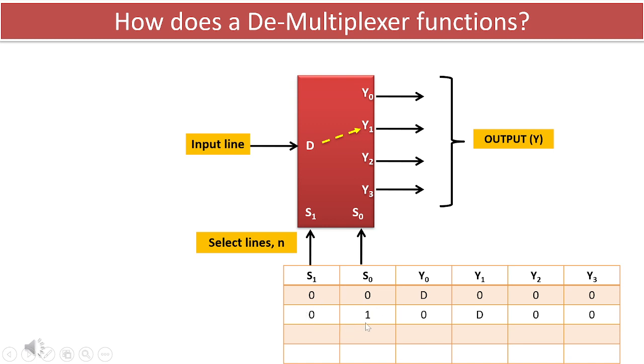When the select lines are configured as s1 equals 0 and s0 equals 1, the data D from the input is routed to the output y1, as illustrated in the diagram. The data at this output can be either in a high or low state.